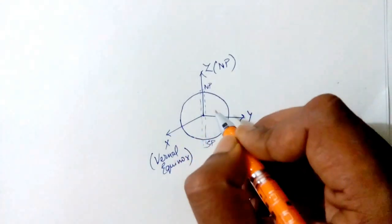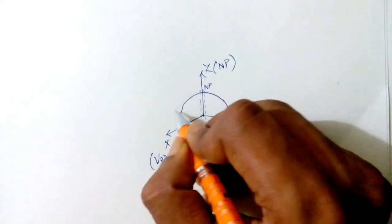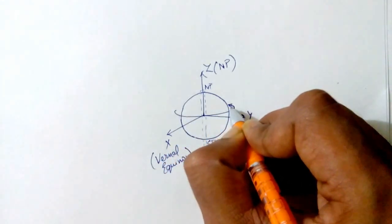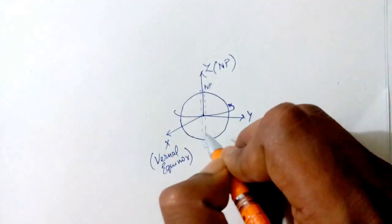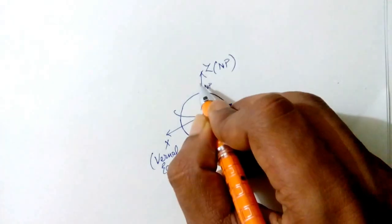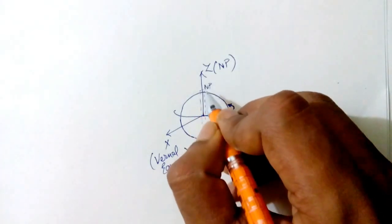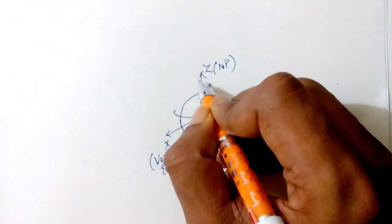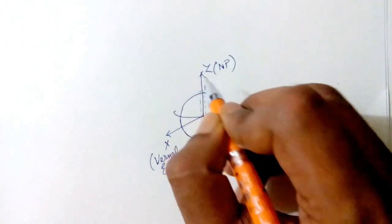Now you will see that the Earth keeps on spinning about its spin axis which coincides with the z-axis. However, the ECI frame—the x, y, and z—they do not spin. So the ECI frame is a perfectly inertial frame.